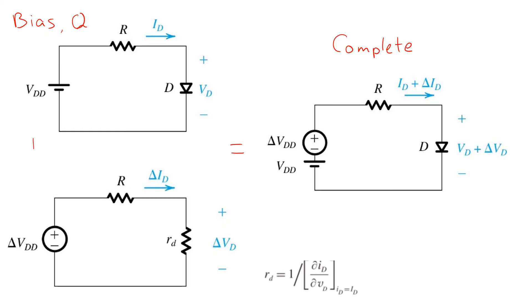The superposition of that plus a small signal analysis where we solve only for the incremental quantities. You'll notice in the top picture delta VDD is equal to zero and so is replaced by a short circuit.